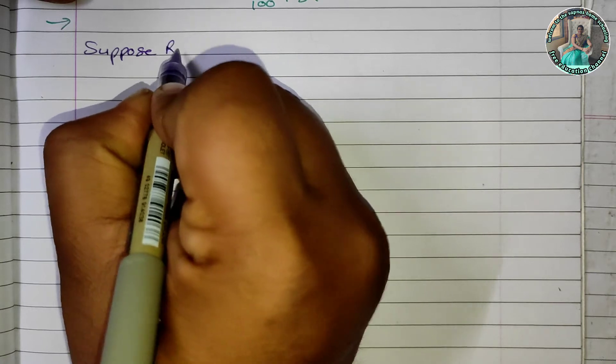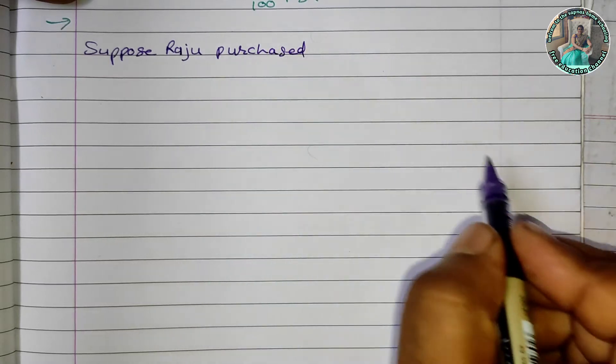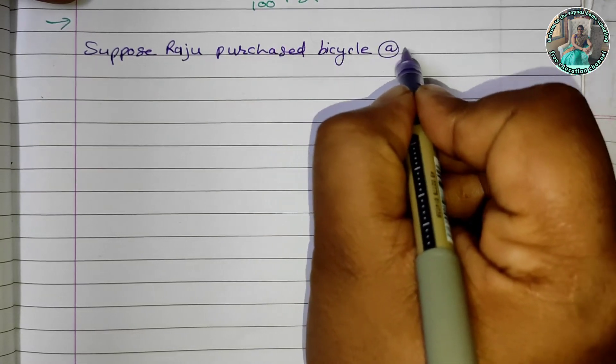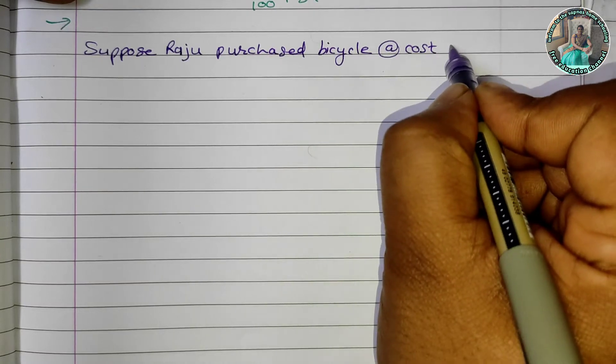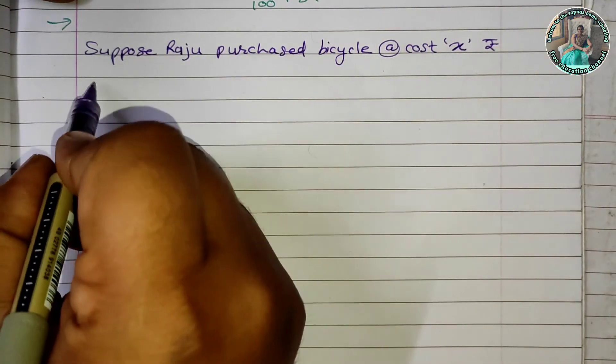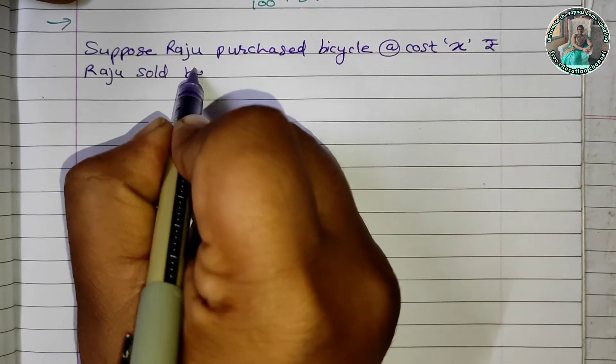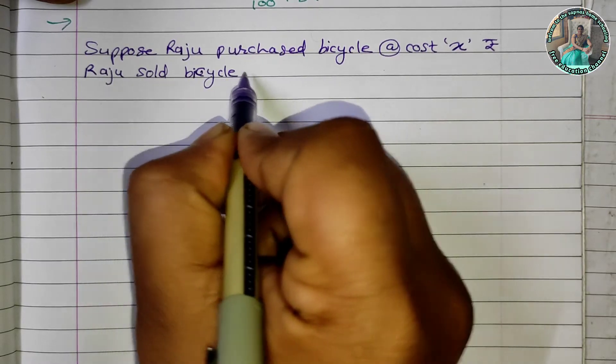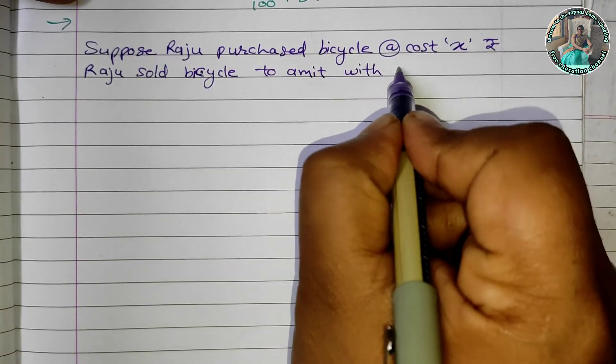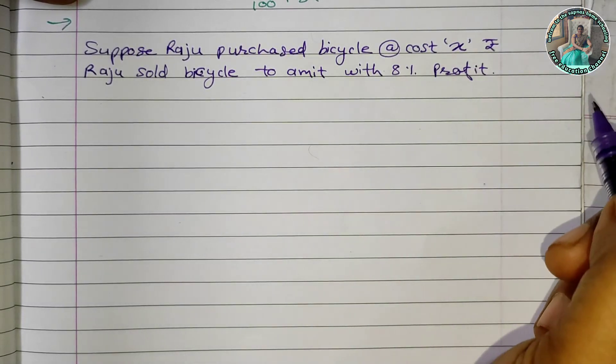Suppose Raju purchased bicycle at cost x rupees. Raju sold bicycle to Amit with 8% profit.